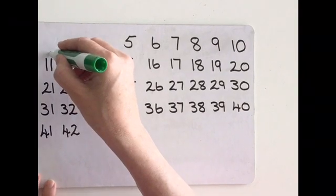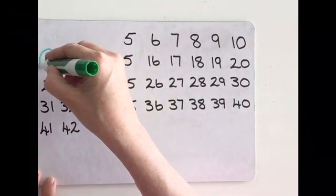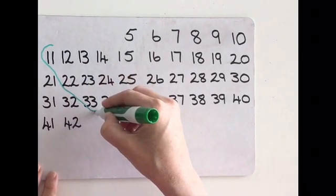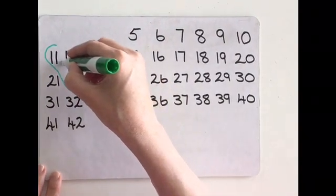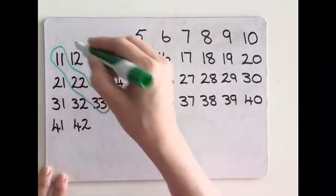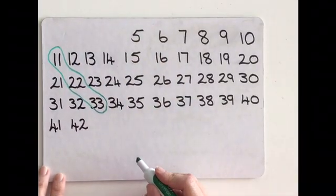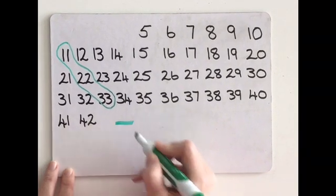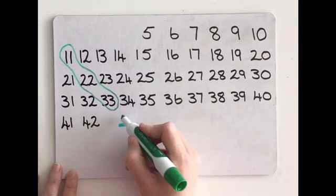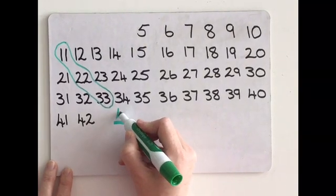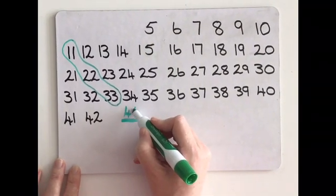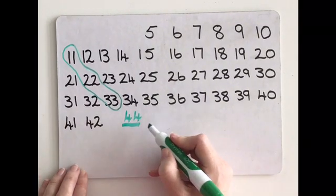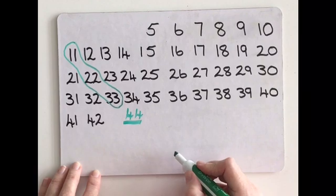Sometimes learners will identify a more complex pattern. For example, one of mine saw the diagonal pattern of 11, 22, and 33. Their thinking was that 11 was two 1s, then there were two 2s and two 3s, so the next one would be two 4s. Asking the class if there were any other patterns that could prove this, one learner said that the numbers in that column all ended in 4, and all the tens in the row would be 4, so it had to be 44.